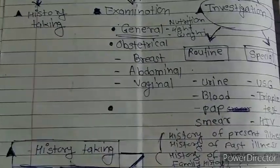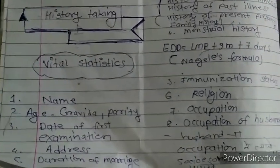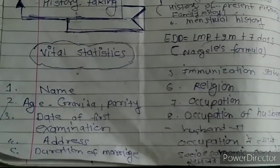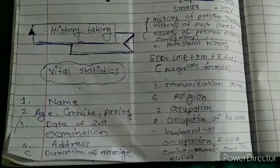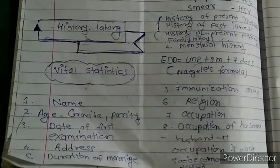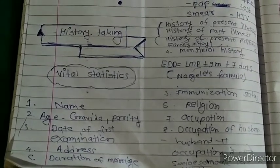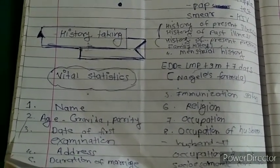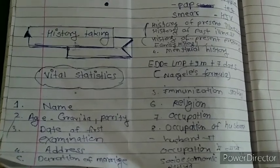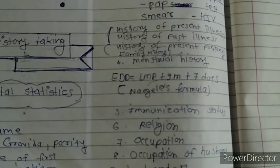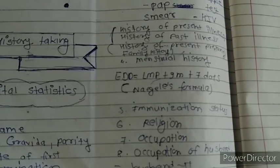History taking and vital statistics include: name, age, gravida and parity, date of first examination, address, and duration of marriage. Also collected are history of present illness, history of past illness, history of present pregnancy, family history, and menstrual history.